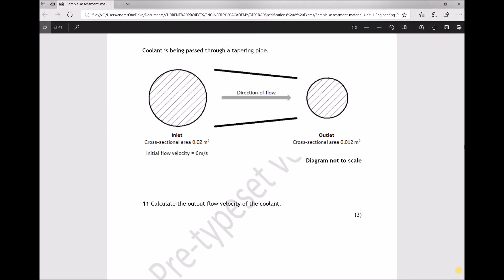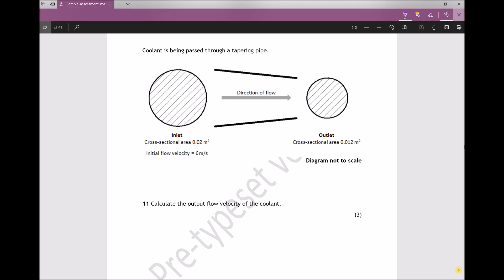Question 11 requires us to apply the continuity equation. The question states coolant is being passed through a tapering pipe, and we have a diagram of the tapering pipe there with an inlet area of 0.02 metres squared and an outlet area of 0.012 metres squared, so the area is reducing. We're also given the initial velocity here, and the question asks us to calculate the output flow velocity of the coolant, so what we're trying to find is the velocity on the right-hand side here.